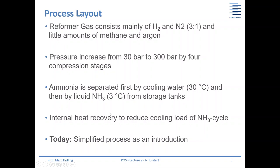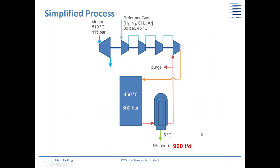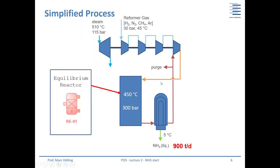There is also internal heat recovery to reduce the cooling load of the ammonia cycle. For today's simplified process, we look at the compression of the feed gas — the fourth stage is run by a steam turbine. Before the fourth stage, the recycle flow is mixed with the fresh feed, then the high-pressure mixture is sent to the reactor. We simulate it simply with an equilibrium reactor, then a phase separator at five degrees Celsius, and a purge stream is required for the simulation to work.